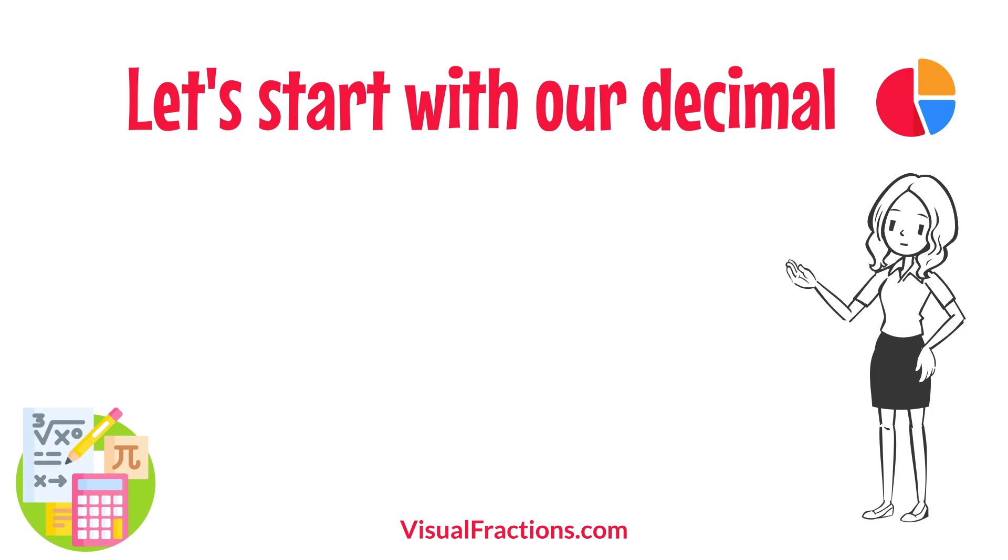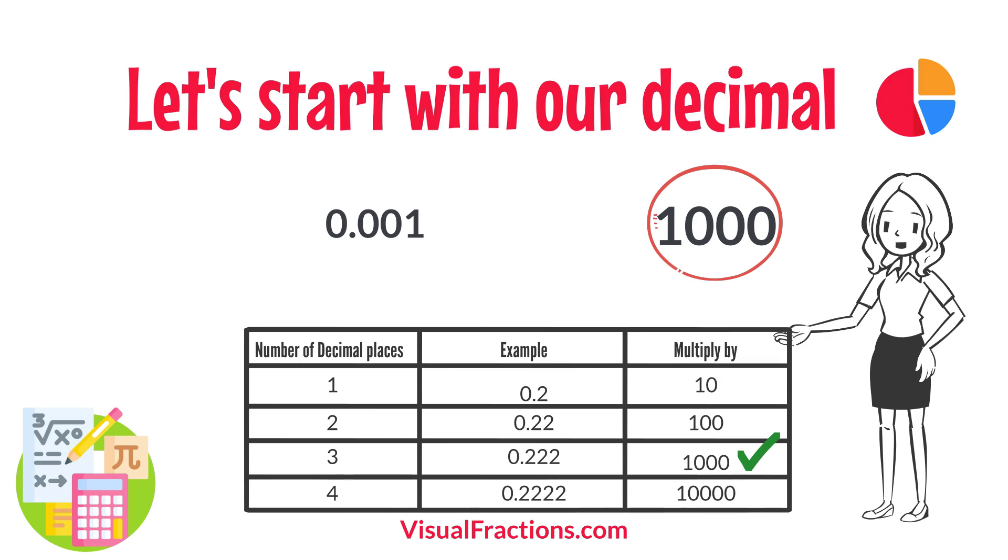Let's start with our decimal, 0.001. Notice there are three digits to the right of the decimal. This places it in the thousandths position.